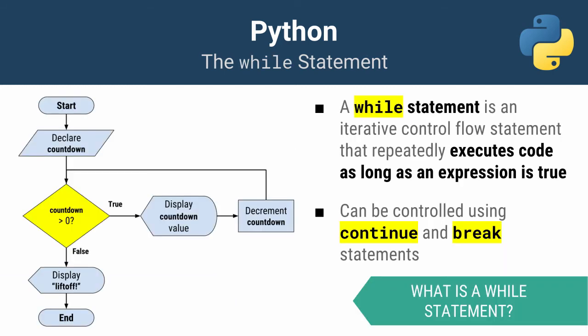Next let's talk about the while statement. The while statement is an iterative control flow statement that allows you to repeatedly execute code as long as an expression is true. In my example process flow, I declare a countdown, and provided that the countdown is greater than zero I display the value and subtract one from it. Once it is no longer greater than zero, I display 'liftoff' — a NASA-style launch countdown.